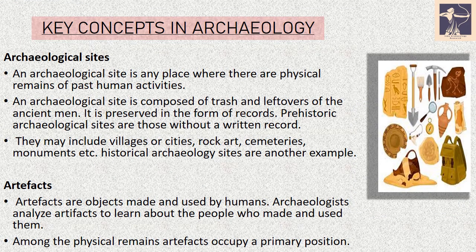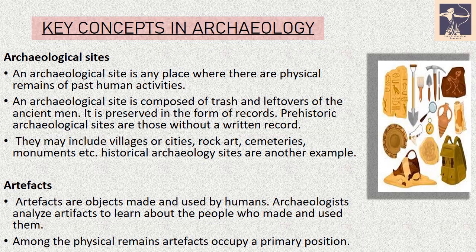Now let's look at some of the important concepts in archaeology. First comes archaeological sites. An archaeological site is any place where there are physical remains of past human activities — it is composed of trash and leftovers of ancient men, preserved in the form of records. Prehistoric archaeological sites are those without a written record and may include villages or cities, rock art, cemeteries, monuments, etc. Next come artifacts. Artifacts are objects which are made and used by humans. Archaeologists analyze these artifacts to learn about the people who made and used them. Among the physical remains, artifacts occupy a primary position.